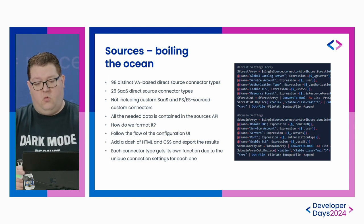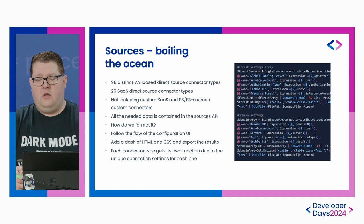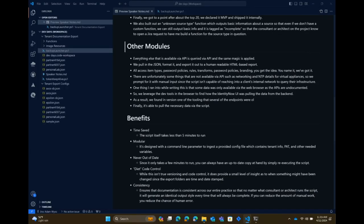After about 20 connectors or so, we declared it MVP and shipped it — it covered about 95% of our use cases. We also built out what I call an unknown source type function, so it'll output basic information like the name, description, and source ID just so we have a note that it exists. That's also a trigger to the architect on the project to open a Jira ticket so that they know to build a connector for that source.